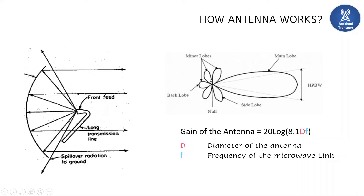Before looking at antenna gain, we need to understand the front-to-back ratio. This is the ratio of forward energy to backward energy. The front-to-back ratio of any parabolic antenna should be very high, meaning most of the energy should be in the forward direction with very minimum energy in the backward direction.